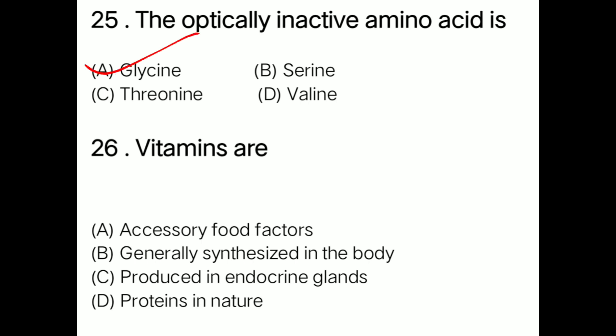Question: Vitamins are option A accessory food factors, option B generally synthesized in the body, option C produced in endocrine glands, option D protein in nature. Correct answer is option A: vitamins are accessory food factors.